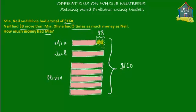Excluding this part — if you include this part, how much money would they have altogether? Well, if you were to include this $8, then altogether they would have $160 plus the $8. Now suppose that Neil's block is one unit. We consider Neil's block as one unit. Then we count how many units there are: 1, 2, 3, 4, 5, and 6. So there are six units of equal size. And if we take Mia's unit also as the same size as Neil's, we'll have to add $8 to that.